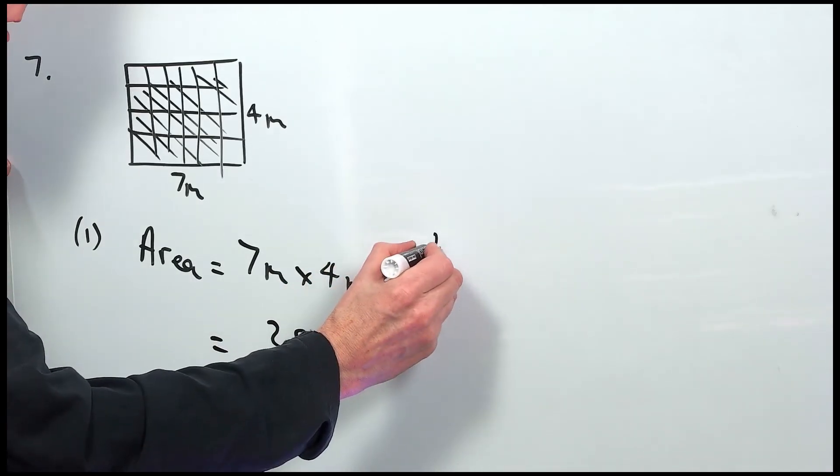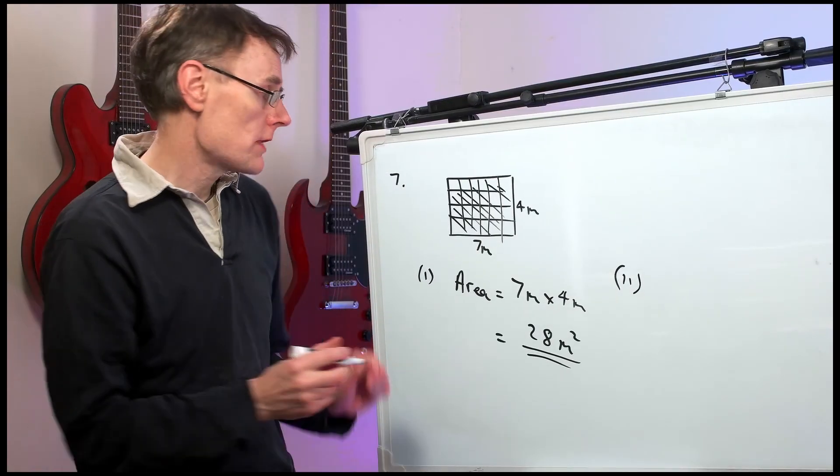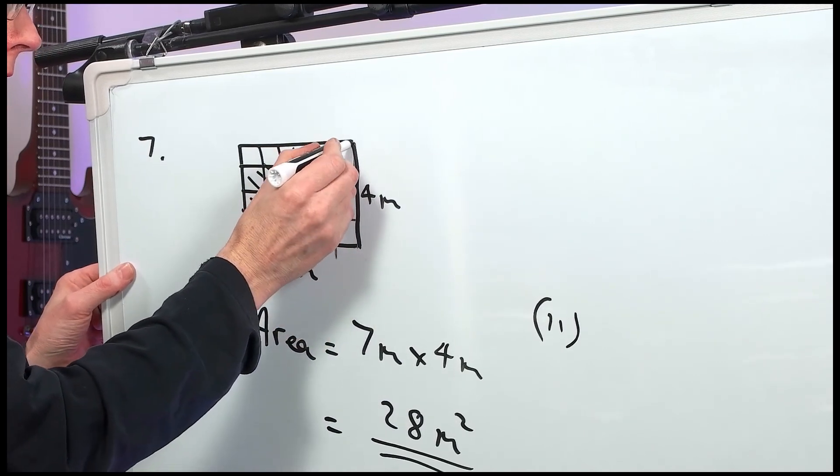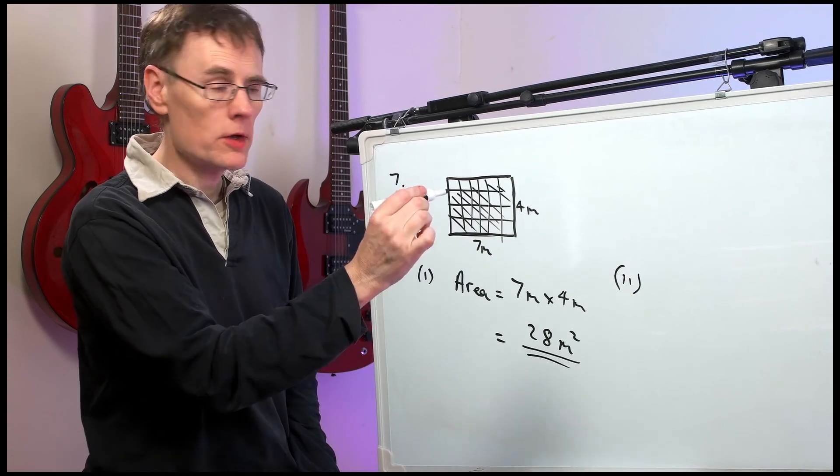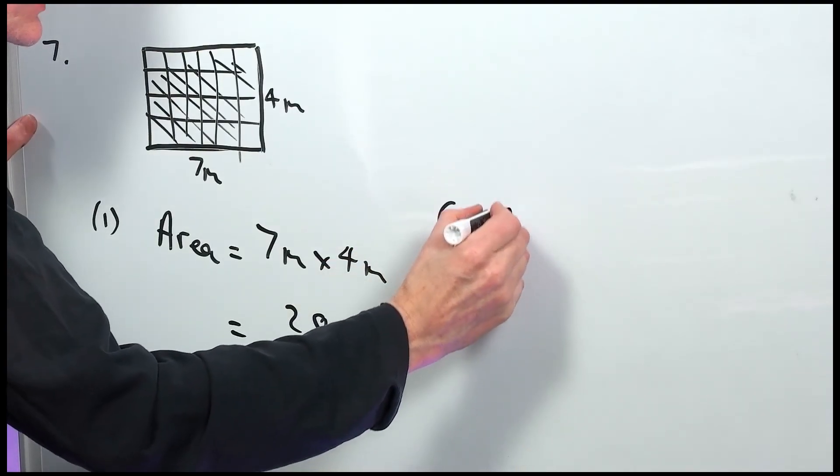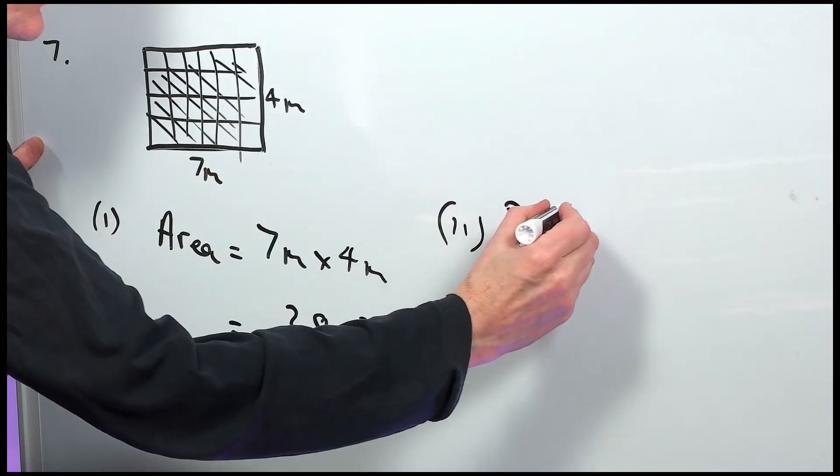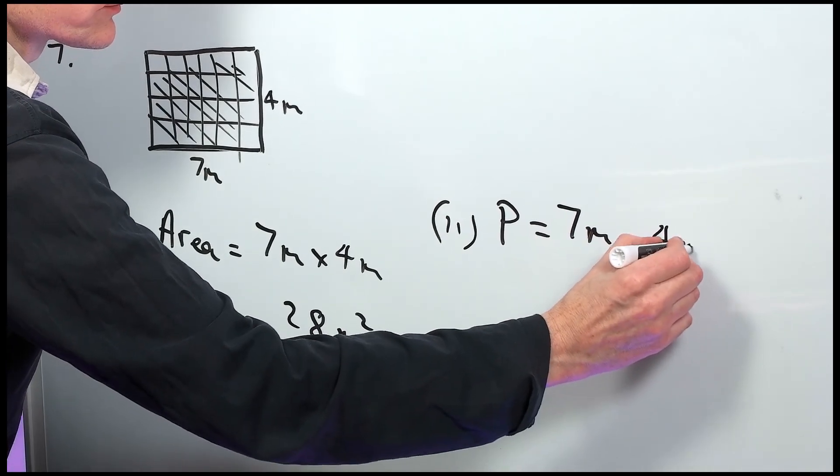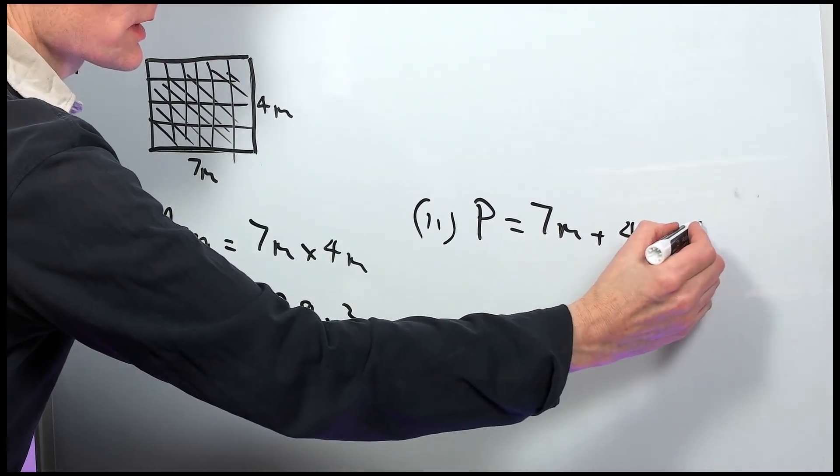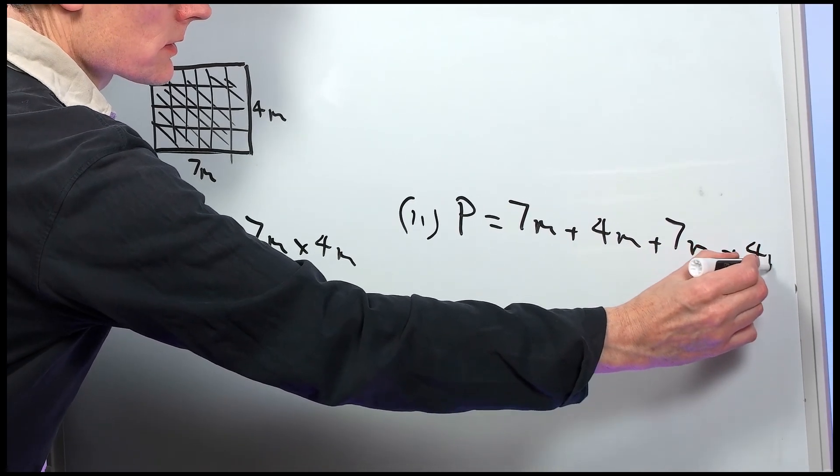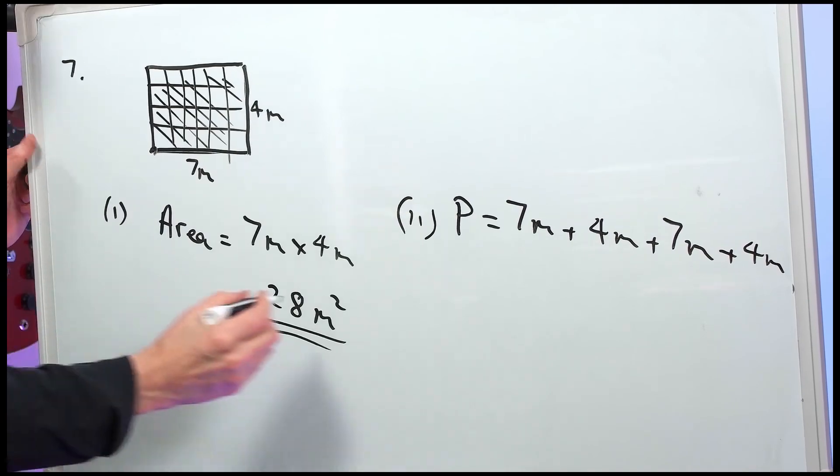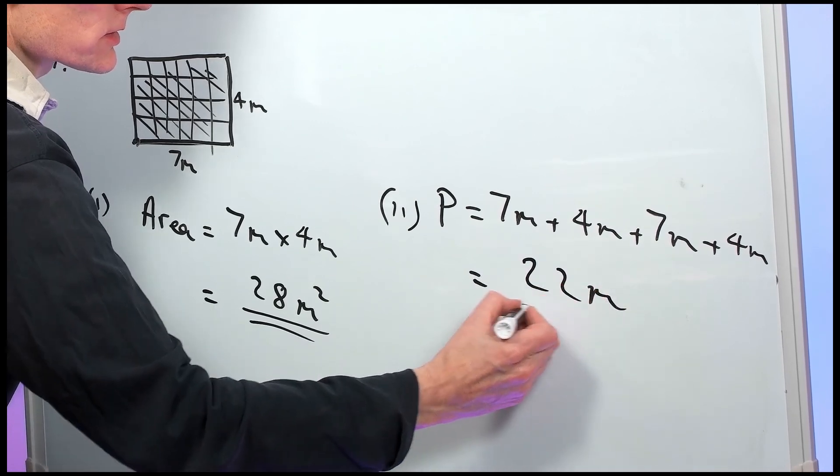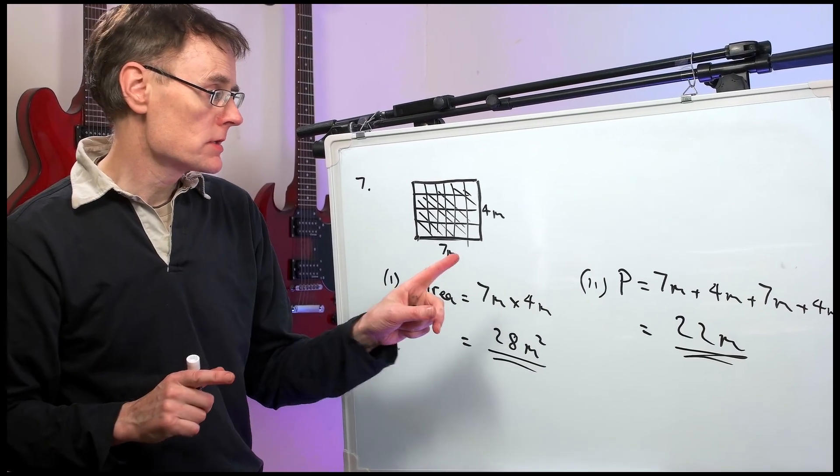Now, part 2 is the perimeter. The perimeter is the length around the edge. We're adding these lengths up. So, it's 7 that way, up there, 4 across this way. If you had to run around the pitch, you'd run around the perimeter. So, let's just say P for perimeter equals 7 metres, plus 4 metres going up there, plus 7 metres across there, plus another 4 metres down the home straight, back to the finish there. So, what do we have? We have 11, and another 11 makes 22 metres. This time, it's just a length. Just in metres, not metres squared.